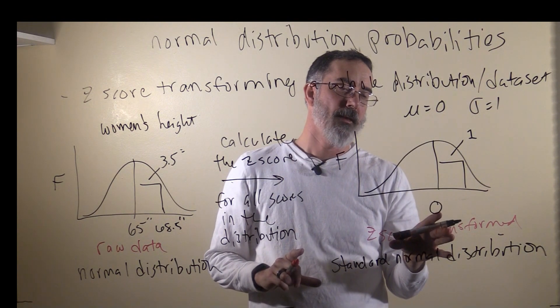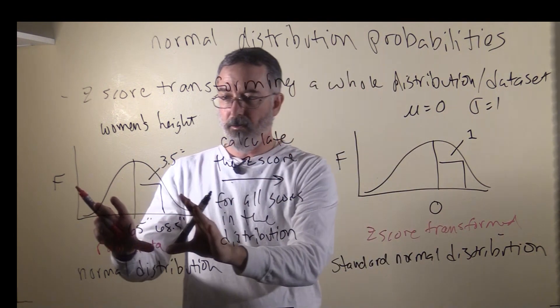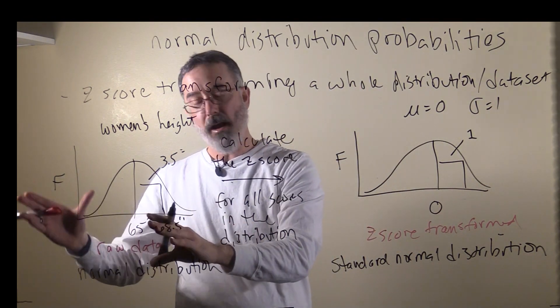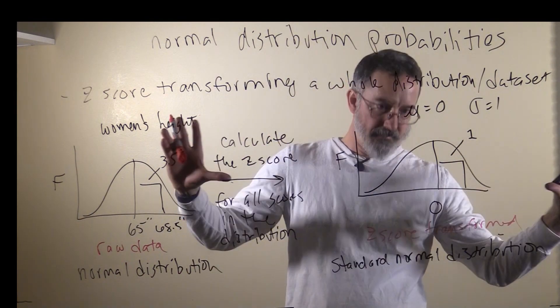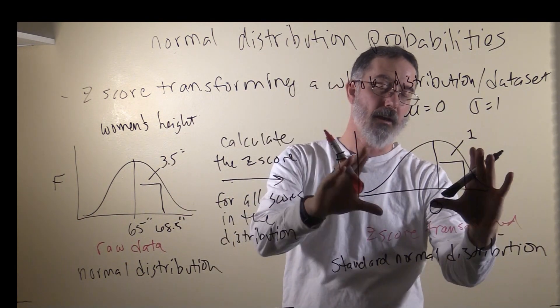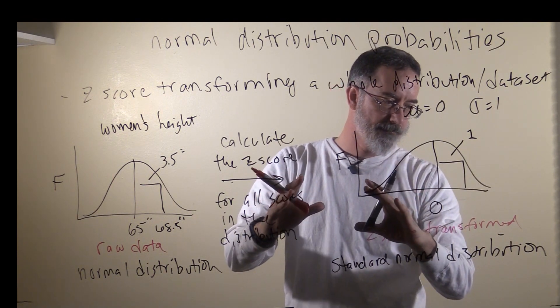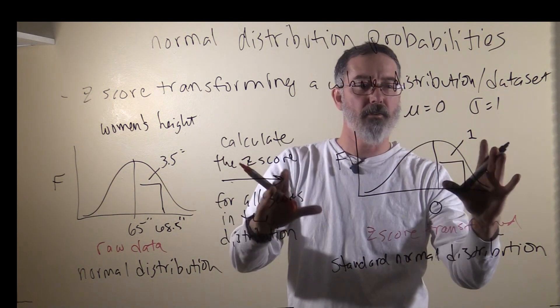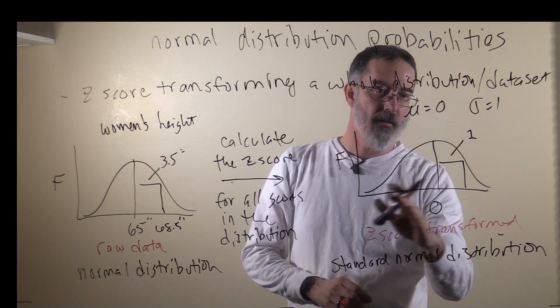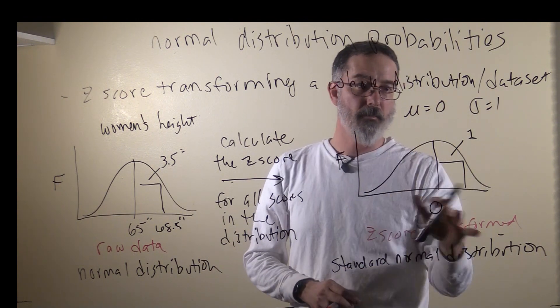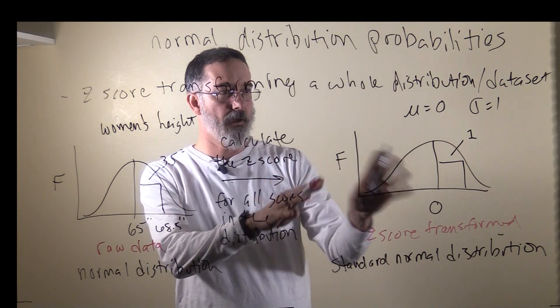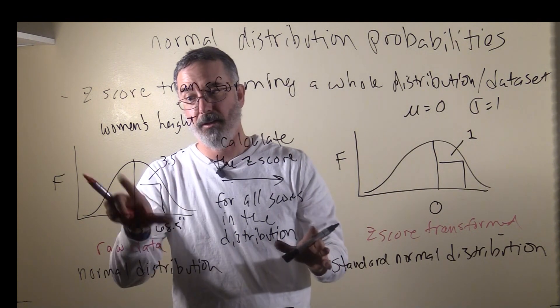One thing that's really nice about that is you can compare variables that have different units, like inches or height. You can standardize them to the same kind of distribution and compare heights with weights, or whatever you want, any kind of variable that is interval or ratio, and therefore can be on this kind of distribution, as long as it's normally distributed originally.